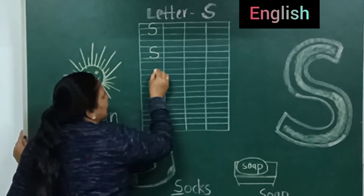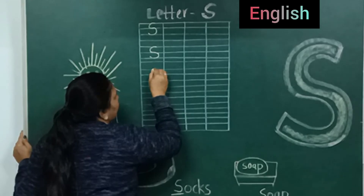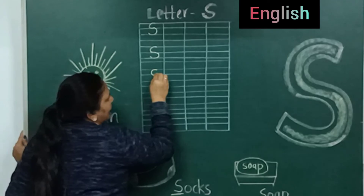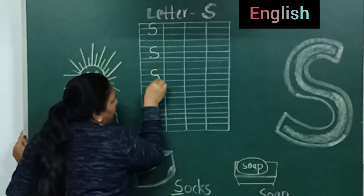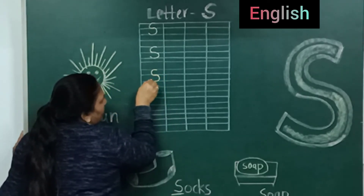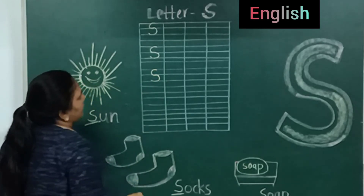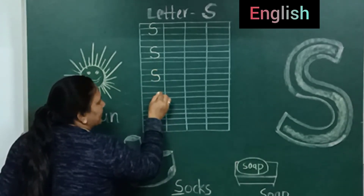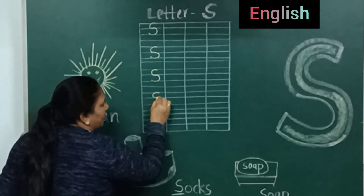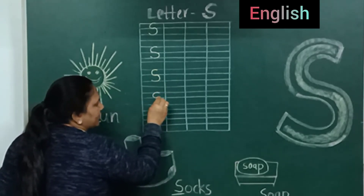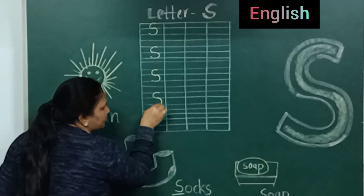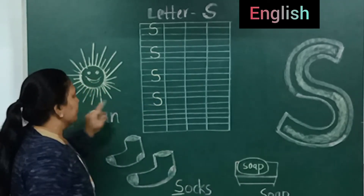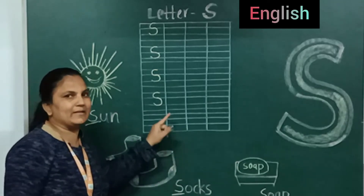First, put your pencil on the red line and we will make a curve till the first blue line. Like this. And we will make another curve till the second blue line. Okay? First, put your pencil on the red line and make the curve to the first blue line, then another curve to the second blue line. Which letter is this? Letter S.